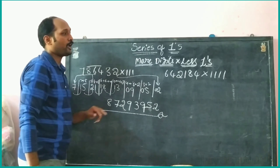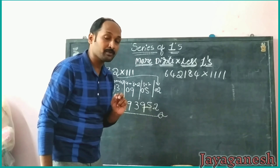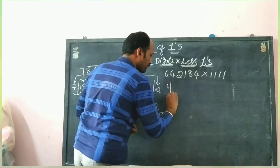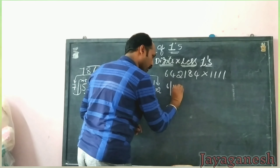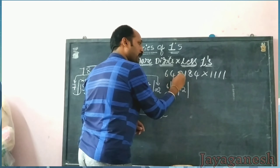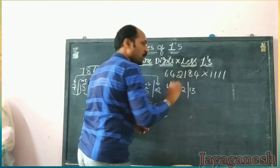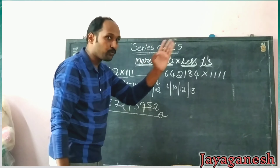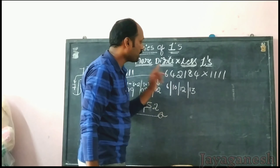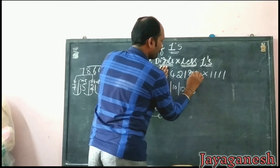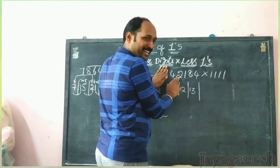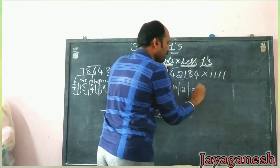Now going to four ones (1111). With four ones, we go till the fourth digit. Drop 6 as it is; 6 plus 4 is 10; 6 plus 4 plus 2 is 12; 6 plus 4 plus 2 plus 1 is 13 — this also we learned in the previous video. Once four digits are done, close the first digit and take the next four digits. 4 plus 2 is 6; 6 plus 1 is 7; 7 plus 8 is 15.